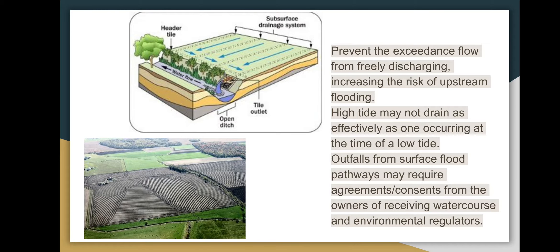The downstream system can also prevent the exceedance flow from freely discharging, increasing the risk of upstream flooding. For example, when discharging to coastal areas, tide levels may affect the performance of surface flood pathways, and an extreme event coinciding with a high tide may not drain as effectively as one occurring at the time of a low tide.